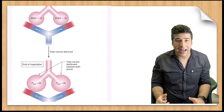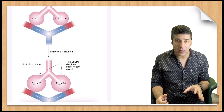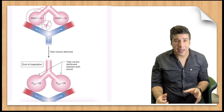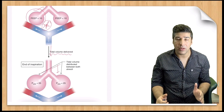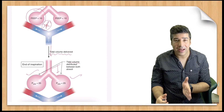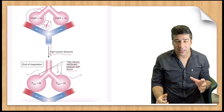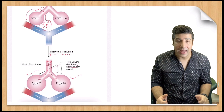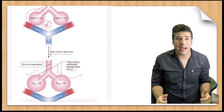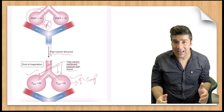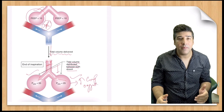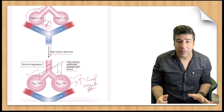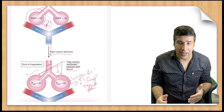When PEEP is applied, it prevents the alveolus from closing. The tidal volume is then distributed between both alveoli — the one that was about to close remains open and participates in ventilation. This increases lung compliance, improves oxygenation, and the plateau pressure is lower — demonstrated here as 25 cmH₂O — because the volume is shared across more alveoli.